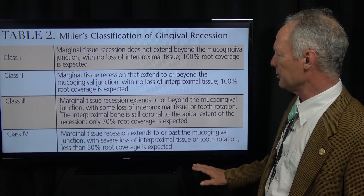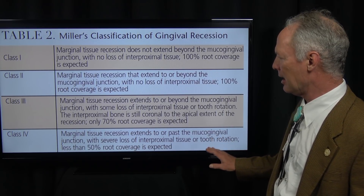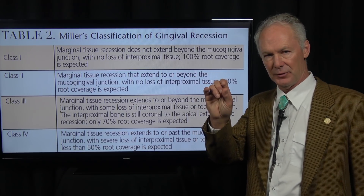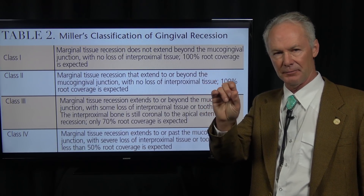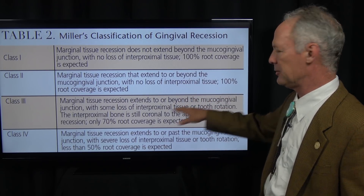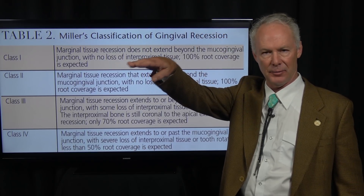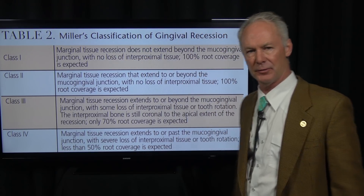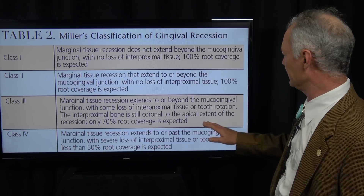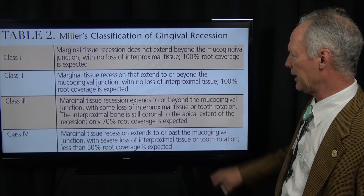Class 2: marginal tissue recession that extends to or beyond the mucogingival junction — into unkeratinized gingiva — with no loss of interproximal tissue, meaning the gingival height is normal and there's no interproximal gingival loss of tissue. Again, one hundred percent root coverage is expected.